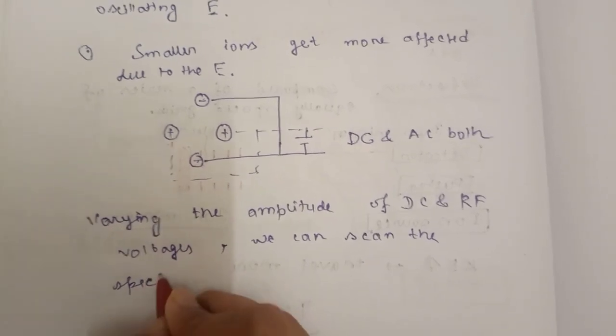By varying the amplitude of DC and radio frequency voltages, alternating radio frequency voltages, we can scan the spectrum. So this is the general idea of quadrupole.